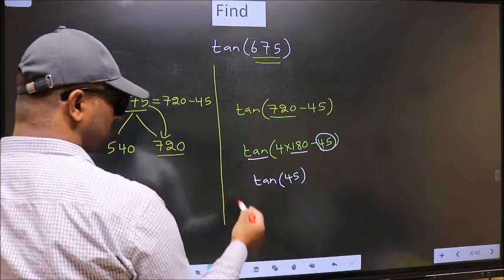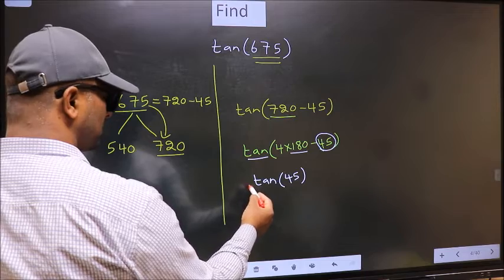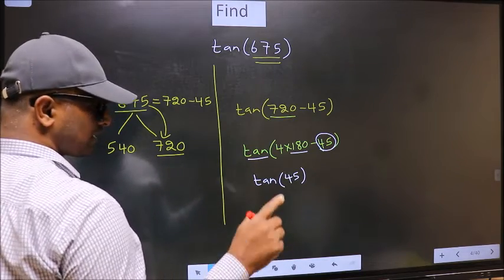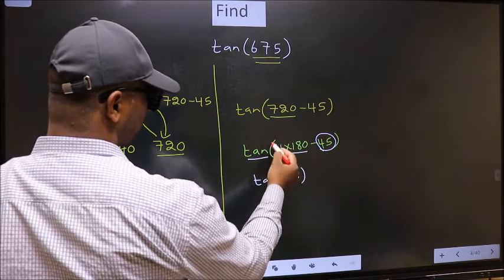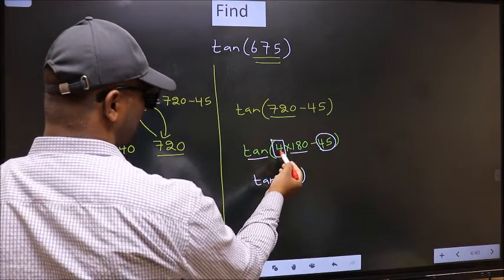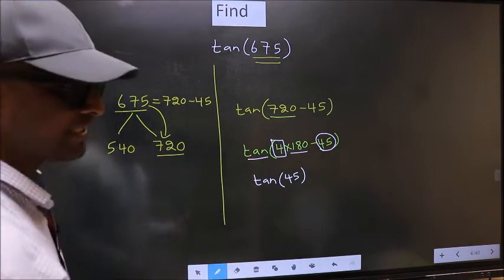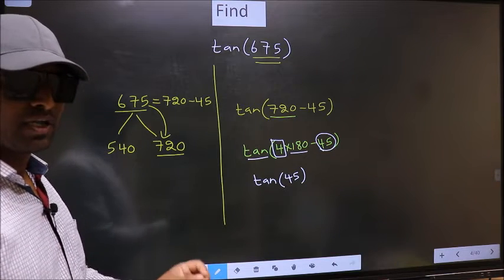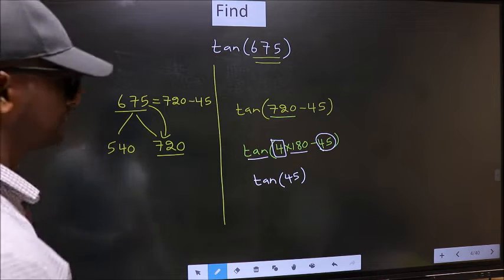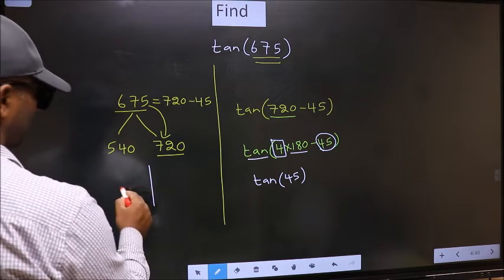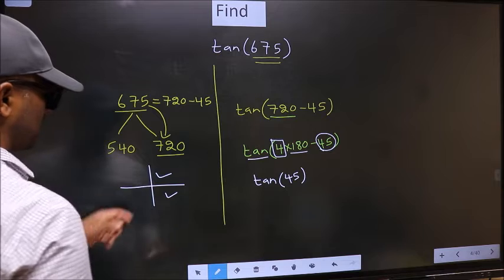Now the question is, will we get here plus or minus? To answer that, we should look at the number before 180. That is 4. And 4 is even. And all the even multiples of 180, they lie in either in the first or in the fourth quadrant.